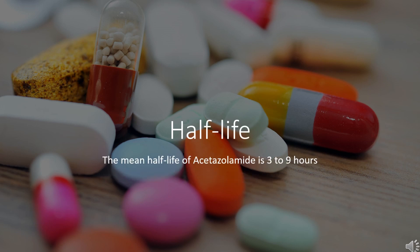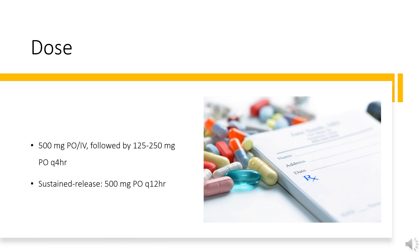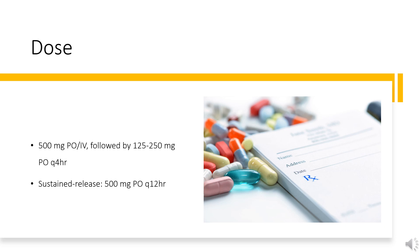Half-life: 3–9 hours. Dosing for glaucoma — Closed-angle acute congestive glaucoma: 500 mg PO, followed by 125–250 mg PO every 4 hours. Sustained release: 500 mg PO every 12 hours. Open-angle chronic simple glaucoma: 250 mg PO once daily or divided every 6–12 hours. Sustained release: 500 mg PO every 12 hours.